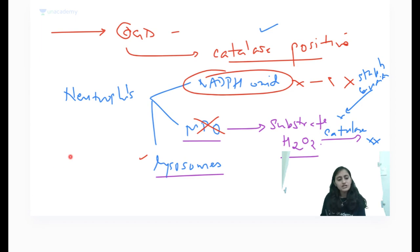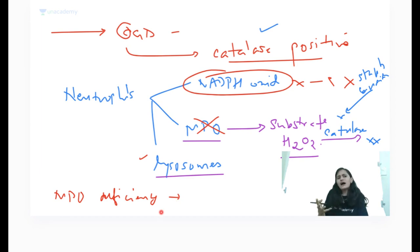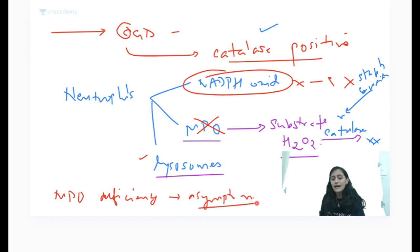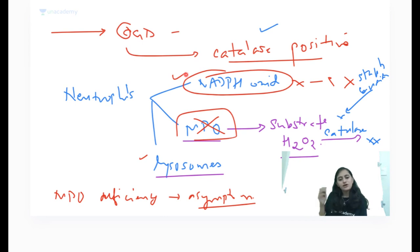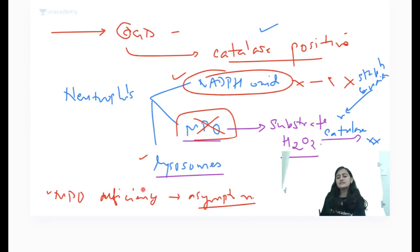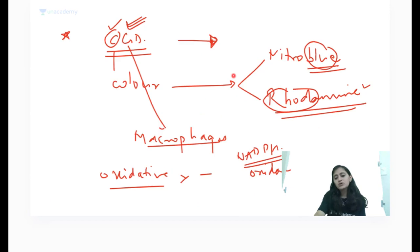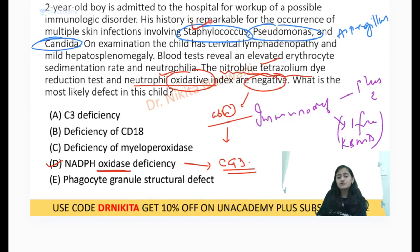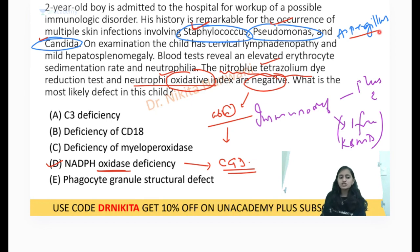Conversely, if a patient has only MPO deficiency, they are generally asymptomatic — because NADPH oxidase, the stronger pathway, remains intact and handles all organisms. So remember: MPO deficiency is asymptomatic, while CGD presents prominently with catalase-positive organism infections such as Staphylococcus, Pseudomonas, Candida, and Aspergillus. The answer: NADPH oxidase deficiency.